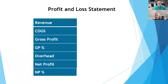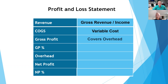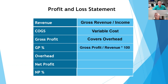On the profit and loss statement, we know the basics: we got revenue — basically how much income you're making. We got cost of goods sold, but I like to call it variable costs. You take revenue minus your variable costs and that gives you what they call your gross profit — and your gross profit percentage.